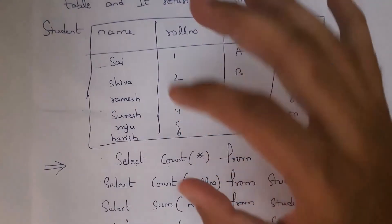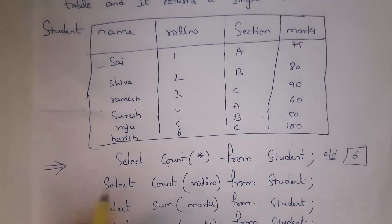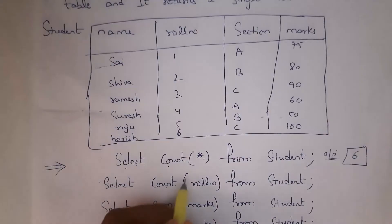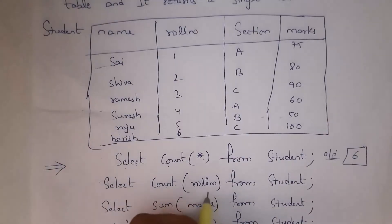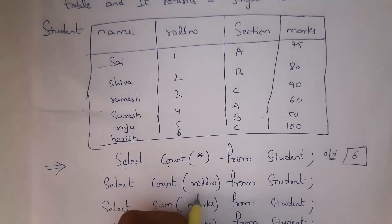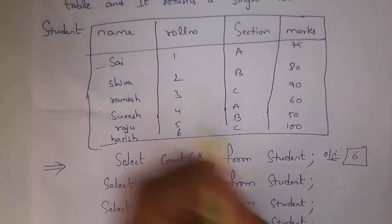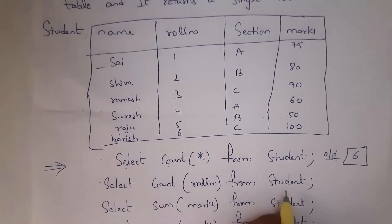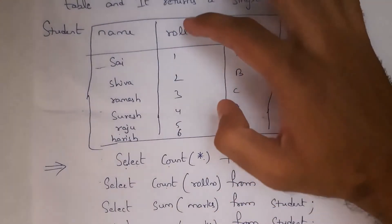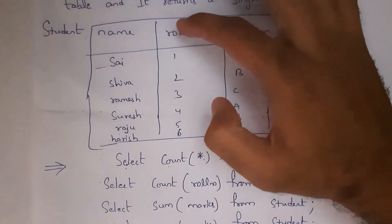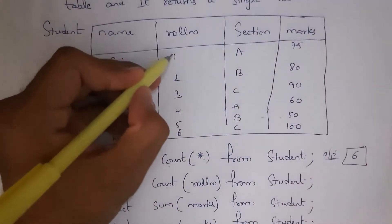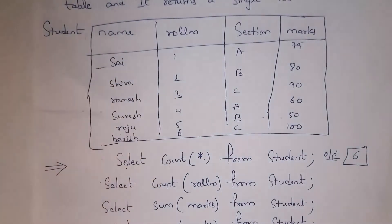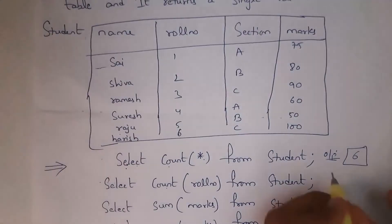So I write: SELECT COUNT(rollnumber) FROM student; I want to count the number of rows present only in the roll number column. Whenever you write this code and press Enter, it will count the number of rows in the roll number column — 1, 2, 3, 4, 5, 6 — so I'll get the output: 6.